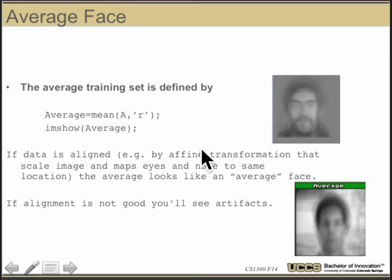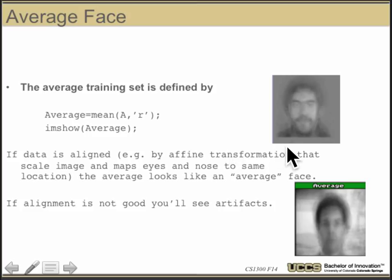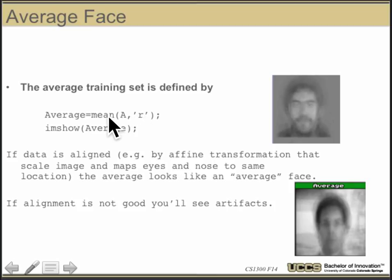One of the things we want to do is compute operations like the mean image, the average face. I can do that in MATLAB by taking the mean of A with argument 'R', which means take the mean across the rows.